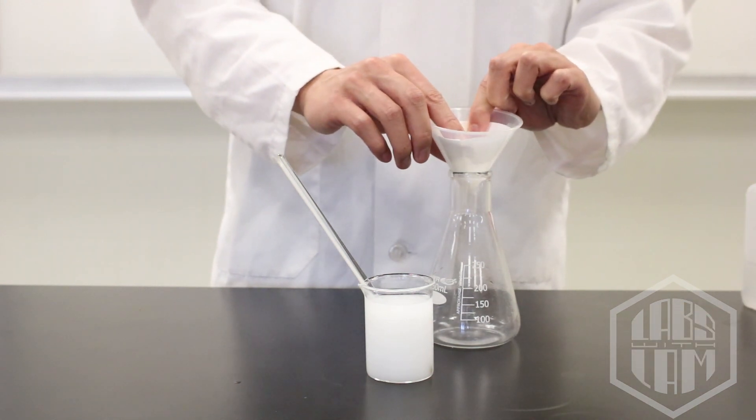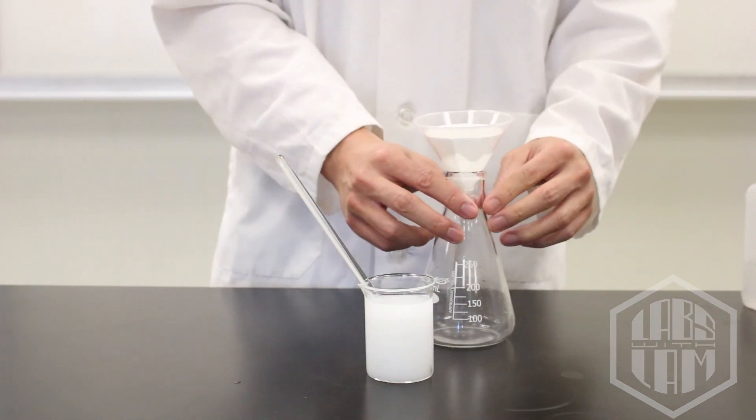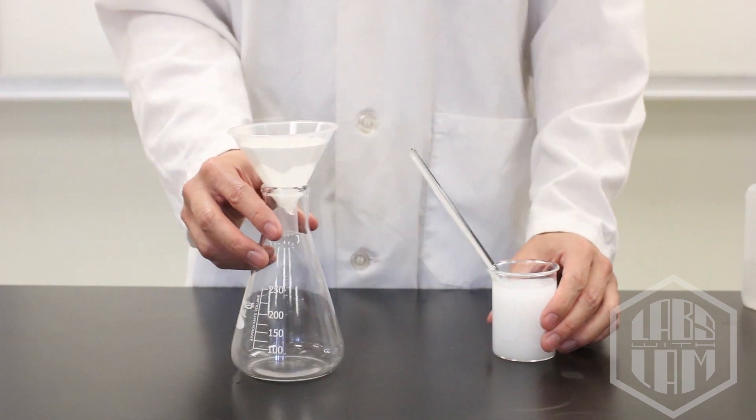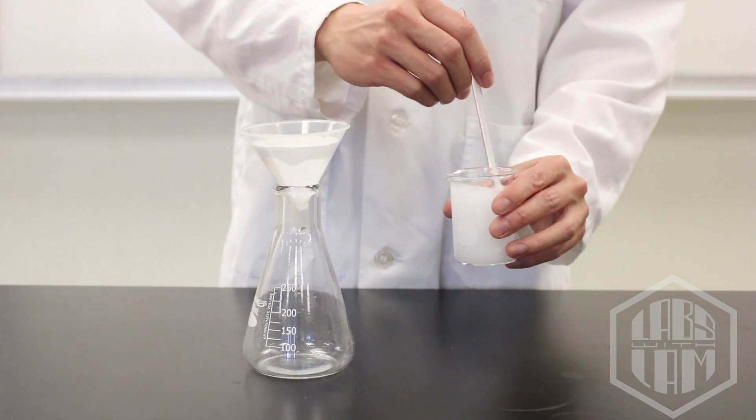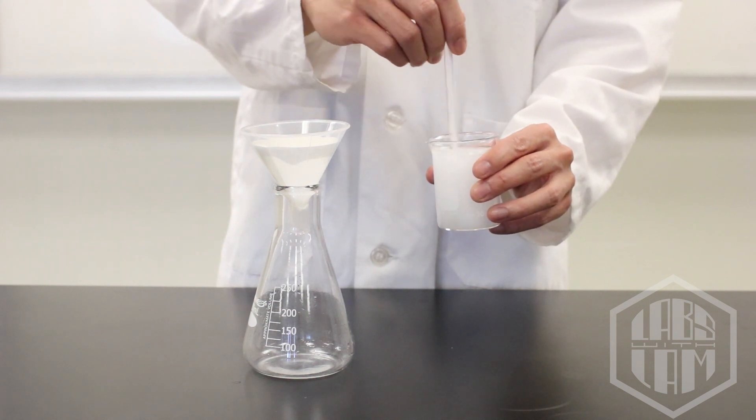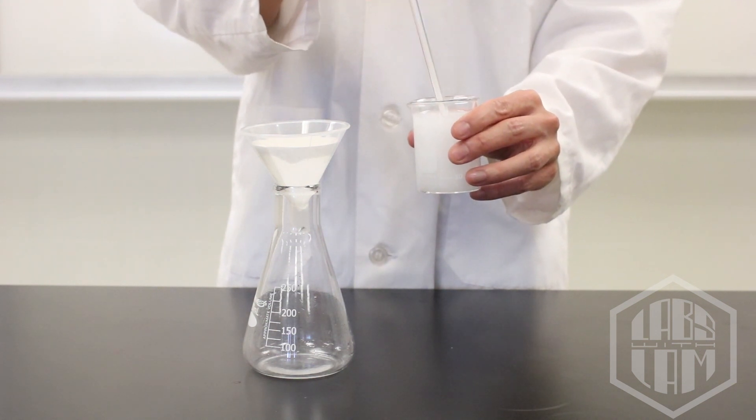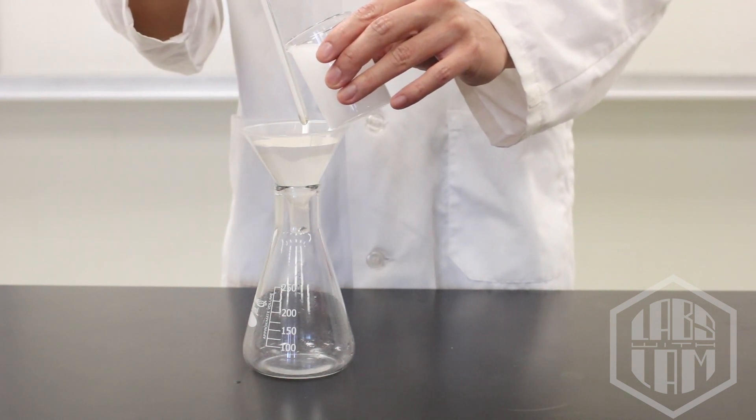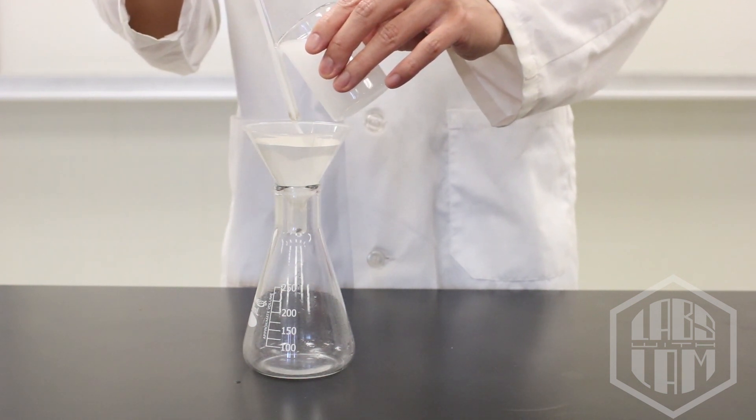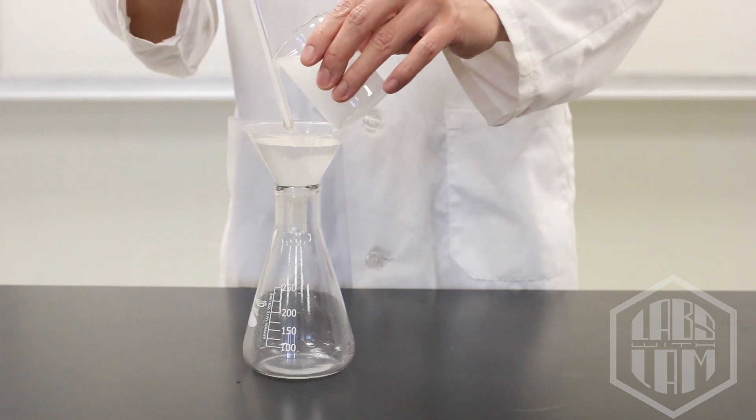I'm going to stir the solution to suspend the precipitate, and then again I'm going to place my stirring rod against the lip of the beaker as I pour to minimize any spilling. It's a pretty useful trick.